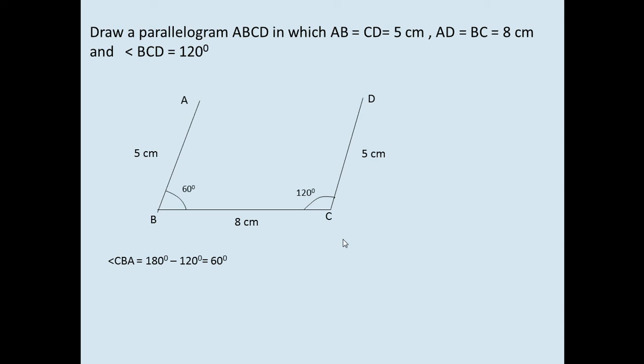Okay, now we have three sides already. We just connect A and D — of course 8 centimeters. This is your parallelogram ABCD, in which AB and CD are 5 centimeters, AD and BC are 8 centimeters, and angle BCD is 120 degrees.